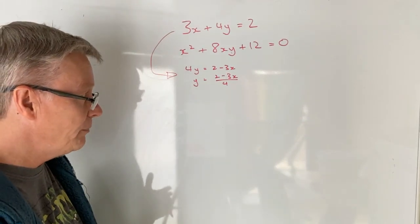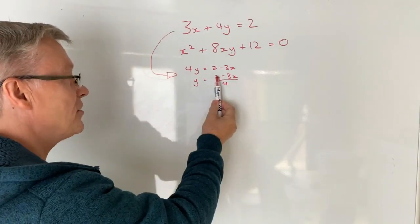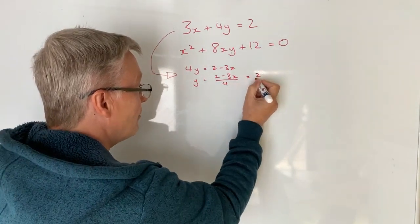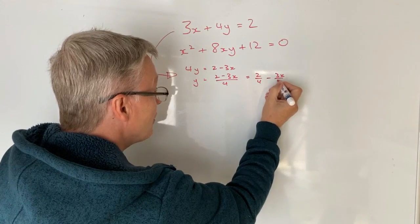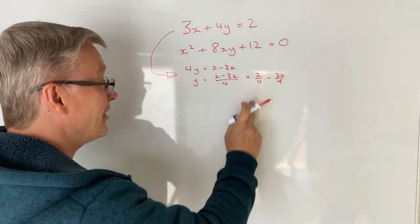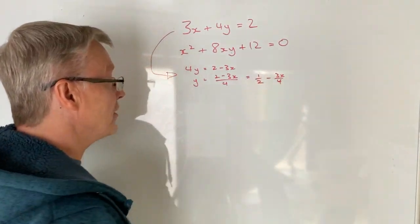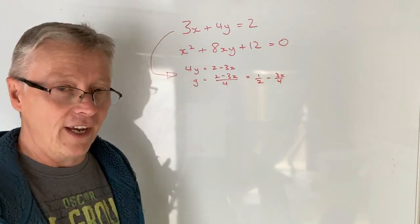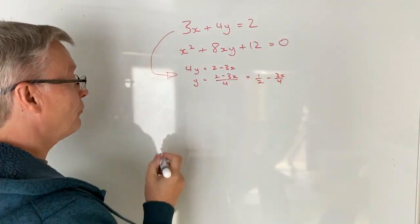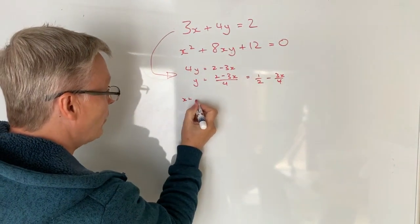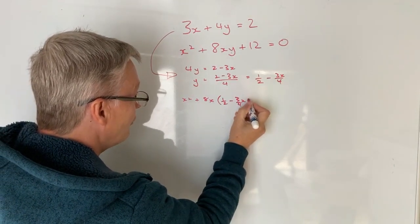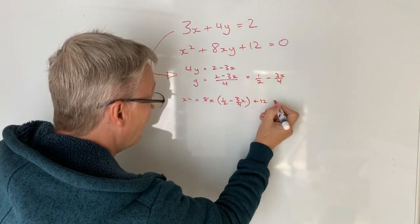So it might be easier if I apply the denominator to each of these two numerators. So what I'm going to do is I'm going to say well that's exactly the same as 2 over 4 minus 3x over 4. And you might notice that actually 2 over 4 is exactly the same as saying a half. So I've got y equals a half minus 3x over 4 and I'm going to use that and substitute it into this particular equation. So I'm going to rewrite this equation as x squared plus 8x multiplied by a half minus 3x over 4 plus 12 equals 0.